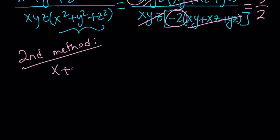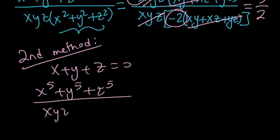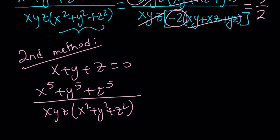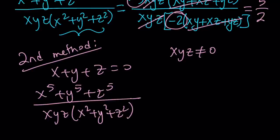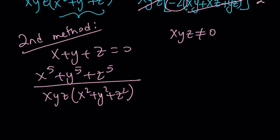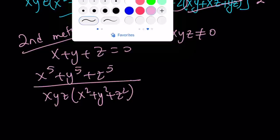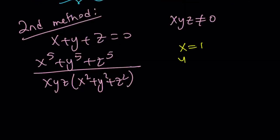We are given x plus y plus z equals 0, and we're evaluating x to the fifth plus y to the fifth plus z to the fifth divided by xyz times x squared plus y squared plus z squared. You can replace x, y, z with numbers, provided the answer is always constant. You don't want xyz to equal 0, and you don't want xy plus xz plus yz to be 0 either. So let's use x equals 1, y equals 1, z equals negative 2 — that satisfies x plus y plus z equals 0. Plugging in: 1 plus 1 plus negative 32 in the numerator; xyz equals negative 2; and x squared plus y squared plus z squared equals 1 plus 1 plus 4 equals 6.